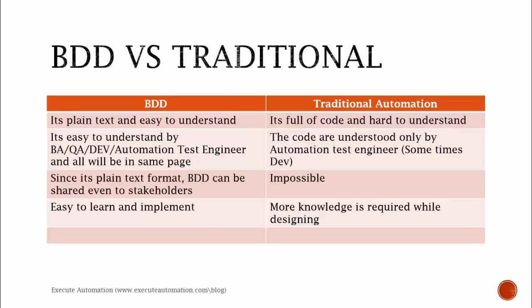What is the major difference between BDD versus traditional automation like Selenium, QTP, Visual Studio, or TestComplete? BDD is plain text and very easy to understand — that's what makes it successful. Traditional automation is full of code and very hard to understand for manual test engineers or business analysts. BDD is easy to understand by a BA, QA, developer, and automation test engineer — everybody will be on the same page. In traditional automation, code is understood only by automation test engineers and sometimes developers.